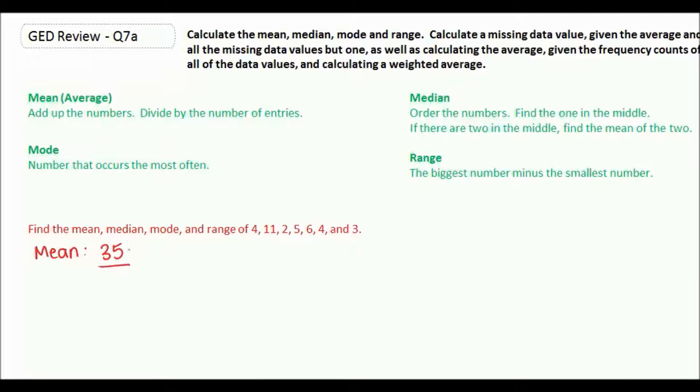And we're going to divide by however many numbers we had, which was 7, which means the mean is 5.